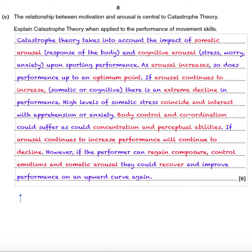However, if the performer can regain composure and control emotions and somatic arousal — they could do that by breathing deeply, taking some time out, thinking of their own stress management techniques, counting to 10, all those basic ones — they could recover and improve performance on an upward curve again.